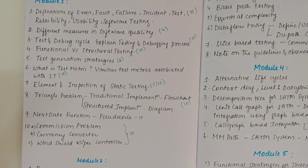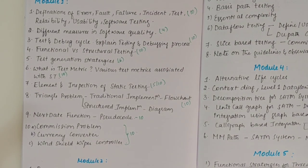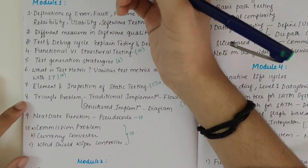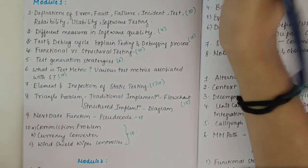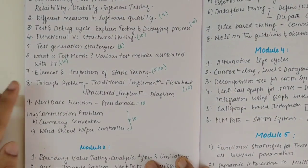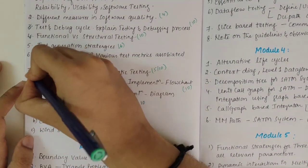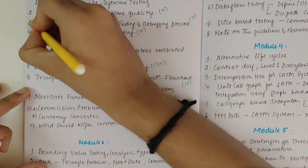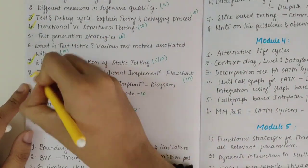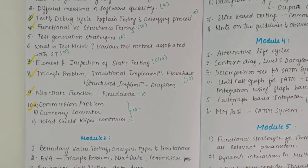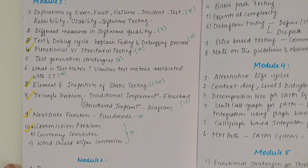I would say that the first module has standard questions. The test and debug cycle has a diagram so it will be asked. Functional versus structural testing has a Venn diagram, so again it is important. Static testing is important. The triangle problem is for sure, and one out of the commission, currency converter, and windshield wiper problems will be asked. Next date function is essential for further modules as well. That was about module one.